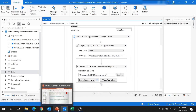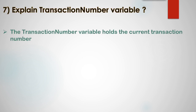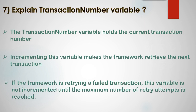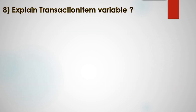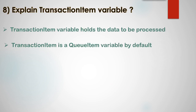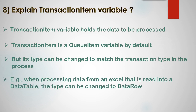The next question is: explain the transaction number variable. This variable holds the current transaction number. Incrementing it makes the framework retrieve the next transaction. If the framework is retrying a failed transaction, this variable is not incremented until the maximum number of retry attempts are reached. The next question is: explain the transaction item variable. This variable holds the data to be processed and is a queue item variable by default, but its type can be changed to match the transaction type.